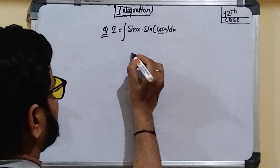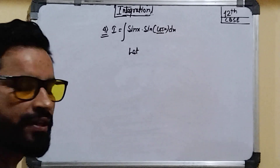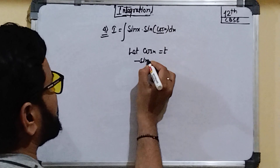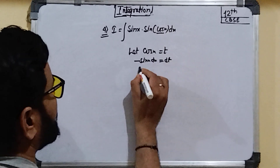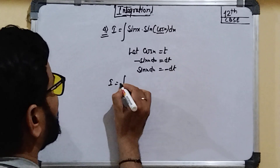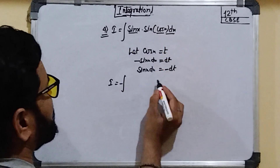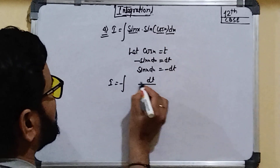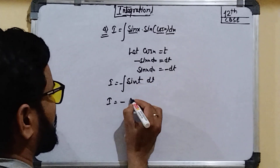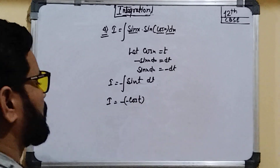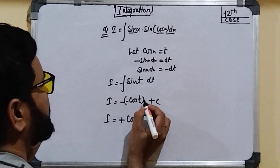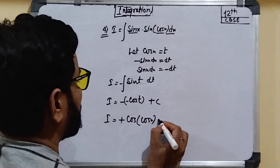We take cos x = t. Differentiating, −sin x dx = dt, so sin x dx = −dt. The integration becomes the integral of −sin(t) dt, which equals −(−cos t) + c = cos t + c. Replacing t with cos x, the answer is cos(cos x) + c.